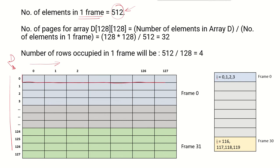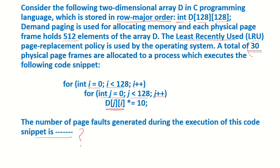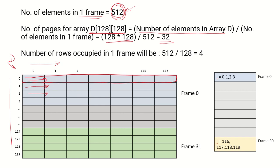That means first this row will be stored then this row will be stored then this one and so on. If we look at the number of pages that would be required to store this array, number of elements in the array are 128 times 128 and only in one frame 512 elements can be stored. So actually 32 pages or page frames would be required, however the operating system is giving only 30 frames to this process.